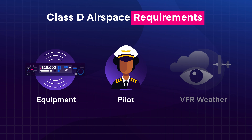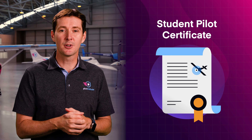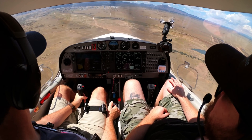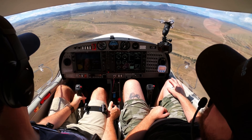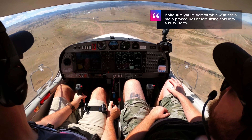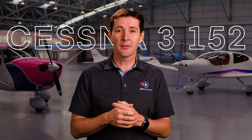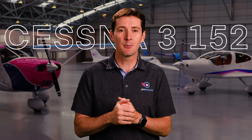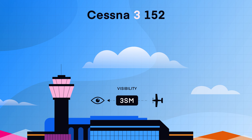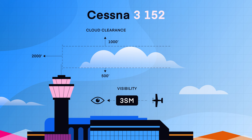Next up, pilot requirements. As long as you hold at least a student pilot certificate, you can enter Class D airspace. But if you're a student pilot or new to flying at towered airports, make sure that you're comfortable with basic radio procedures before flying solo into a busy Delta. Next are the VFR weather minimums. Many pilots use 'Cessna 3-152' as a memory aid: 3 miles of visibility, and for cloud clearance you must remain 1,000 feet above, 500 feet below, and 2,000 feet horizontally from the clouds.